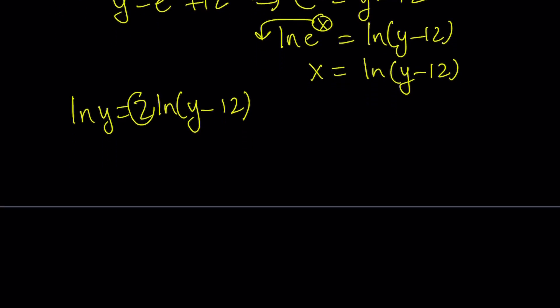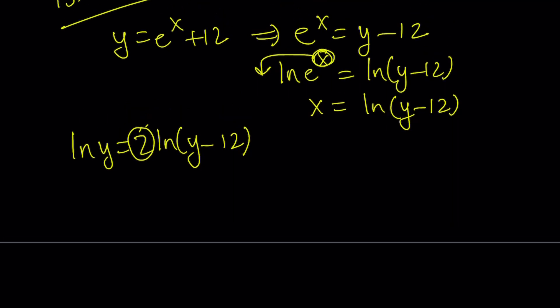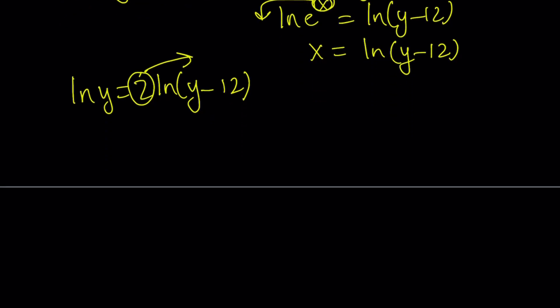So this 2, normally when we have a power like this, we get to move it to the front, and we can do the opposite. So we can go ahead and make it a power, so we get ln y = ln(y - 12)^2. Obviously, the domains of these 2 functions are different, but again, we're going to check that at the end, because one of them, (y - 12)^2, cannot be negative, but y - 12 can be negative. That's why they're different.